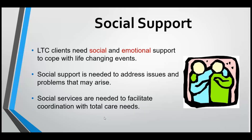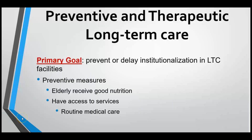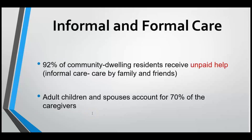Long-term care clients need social and emotional support to cope with life-changing events. Social services are needed to facilitate coordination of total care needs. The primary goal of preventative and therapeutic long-term care is to prevent or delay institutionalization in long-term care facilities. About 92% of community-dwelling residents receive unpaid help, meaning informal care usually provided by family and friends. Adult children and spouses account for 70% of informal caregivers.